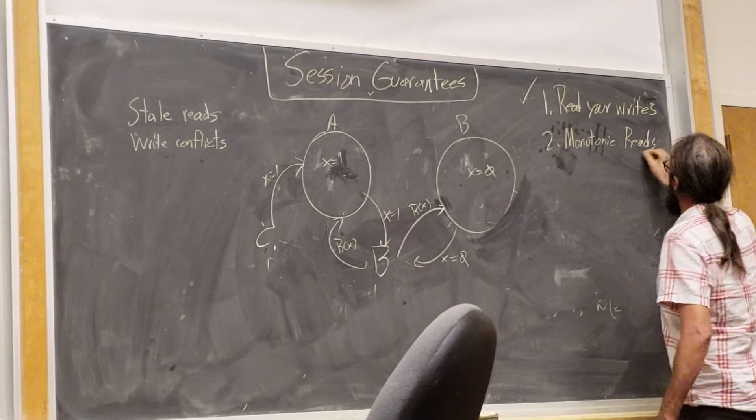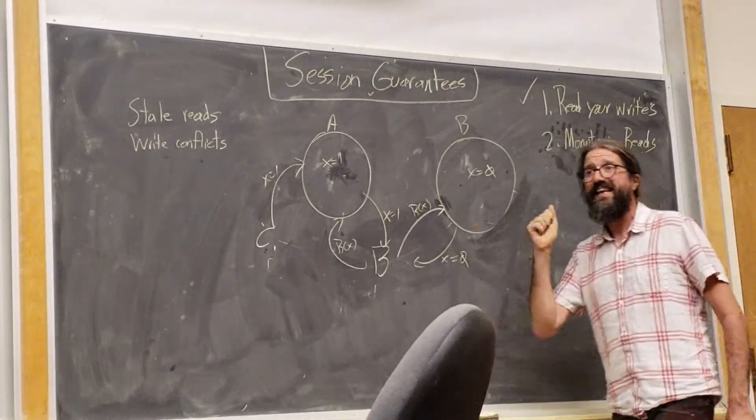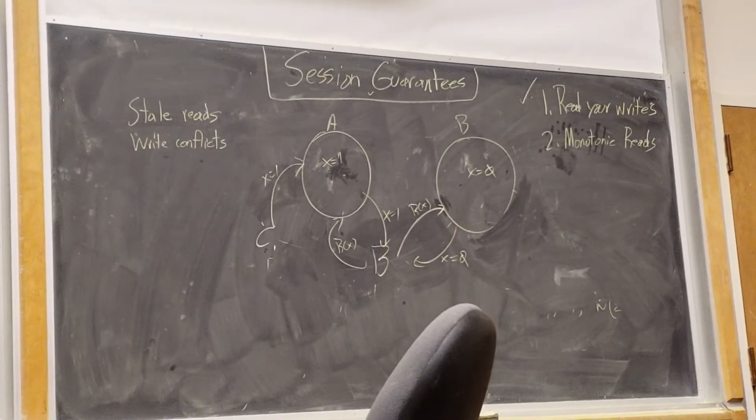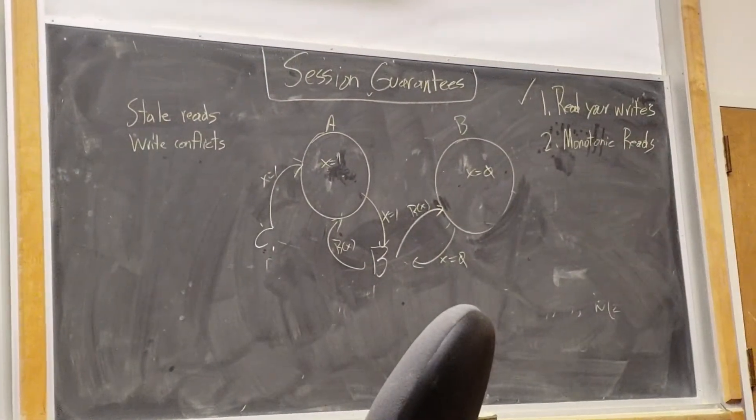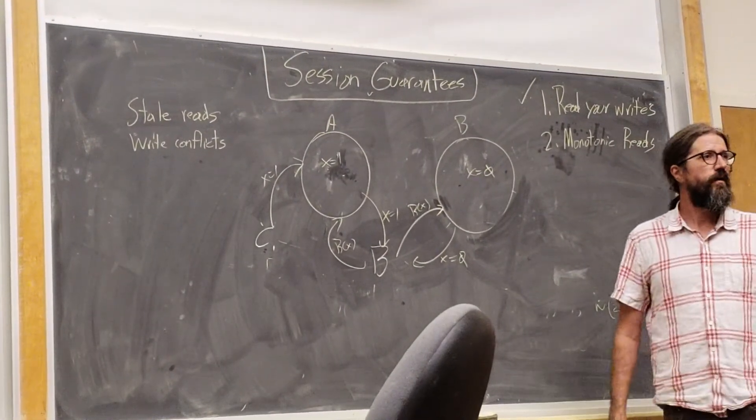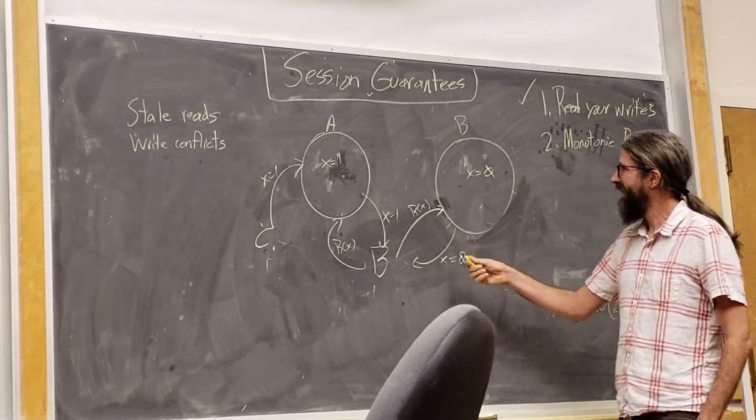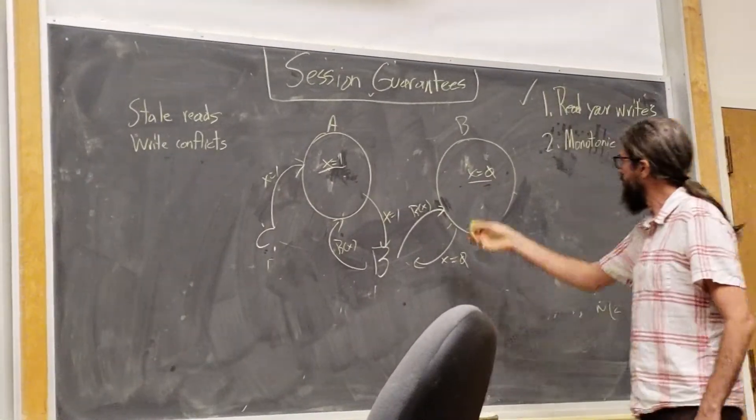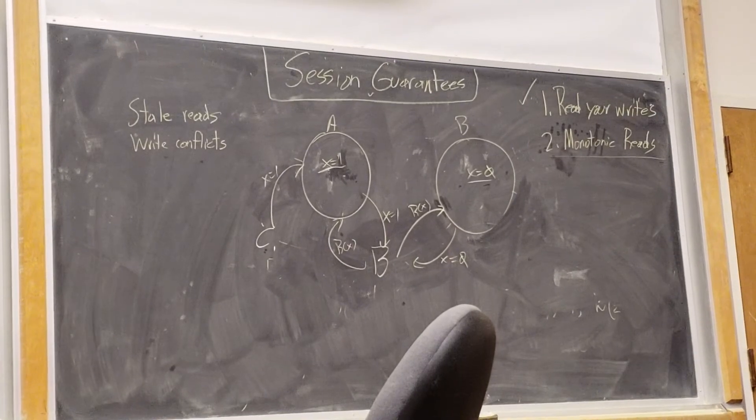In the sense that if I read a variable over and over again, every time I read it I get at least as recent a value as the last time that I read it. I don't see the values go back in time. Why might I care about that? Well, I might know that my application is actually implementing a distributed counter. And counters don't go down. They only get incremented. So if I saw a value of the counter be 1 and then I saw it be 0, I would be like, what? That's no good. So I might want monotonic reads.